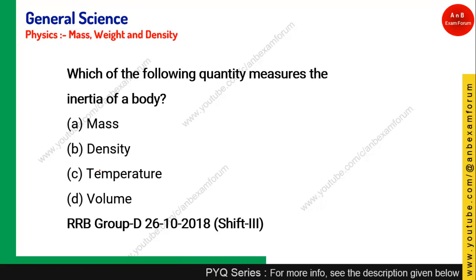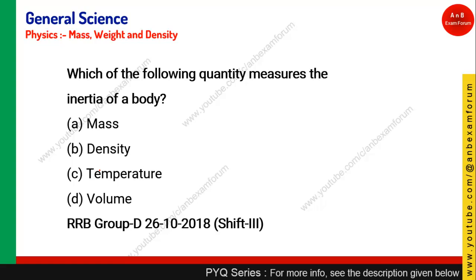Next question: which of the following quantities measures the inertia of a body? Inertia, as defined in Newton's first law (the law of inertia), is the property by which a body at rest remains at rest and a body in motion continues in motion. This happens due to mass — the amount of matter in an object. Therefore, mass is the measure of inertia. Option A is correct.